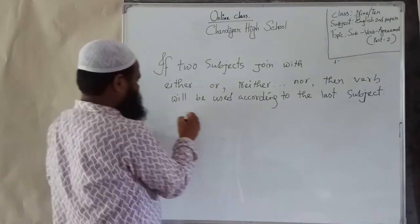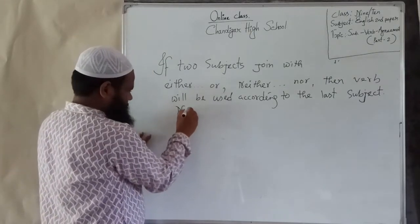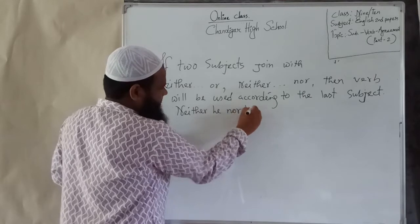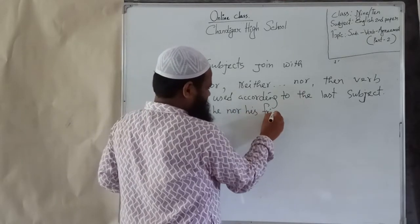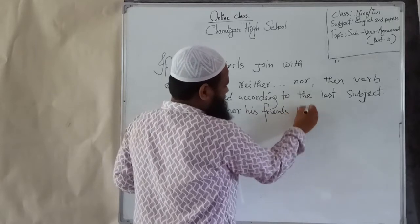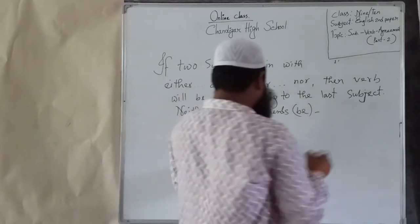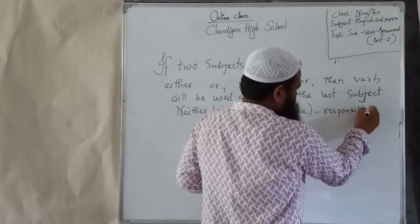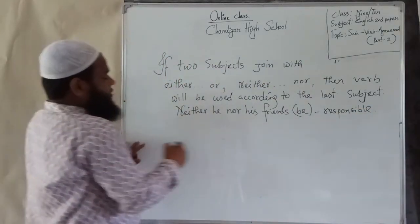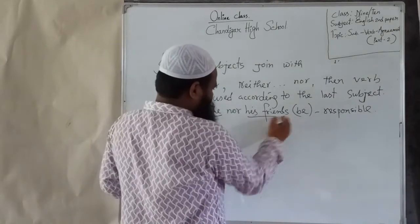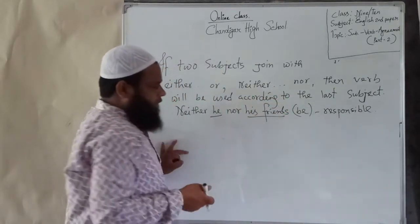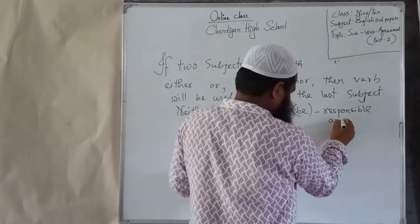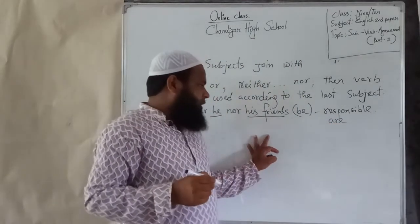For example: 'Neither he nor his friends — be — responsible.' Here the first subject is 'he' and the second subject is 'his friends.' According to the rule, you will have to use the verb according to the second subject. So the answer is: 'Neither he nor his friends are responsible.'